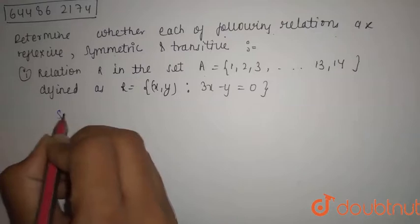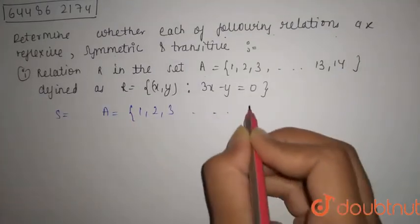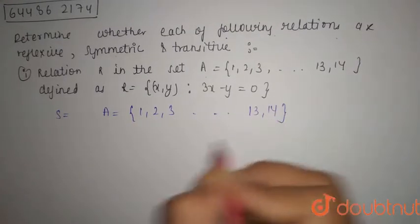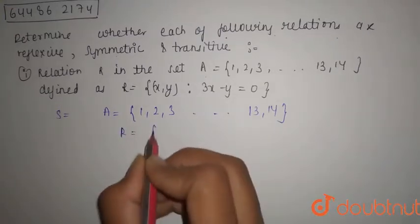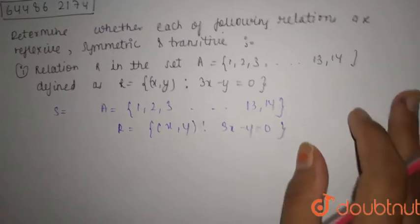So, first of all we have given A, that is the set of 1, 2, 3 and so on up to 13, 14. And R is given as x, y where 3x minus y equals 0 is the relationship between x and y.